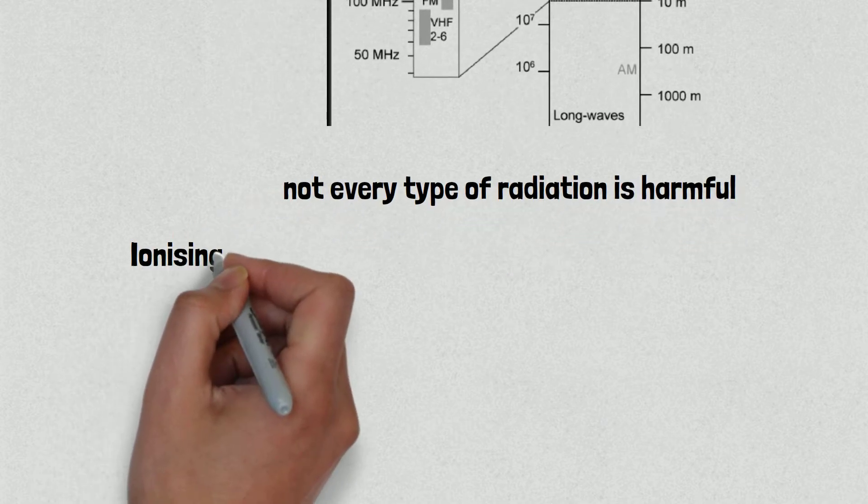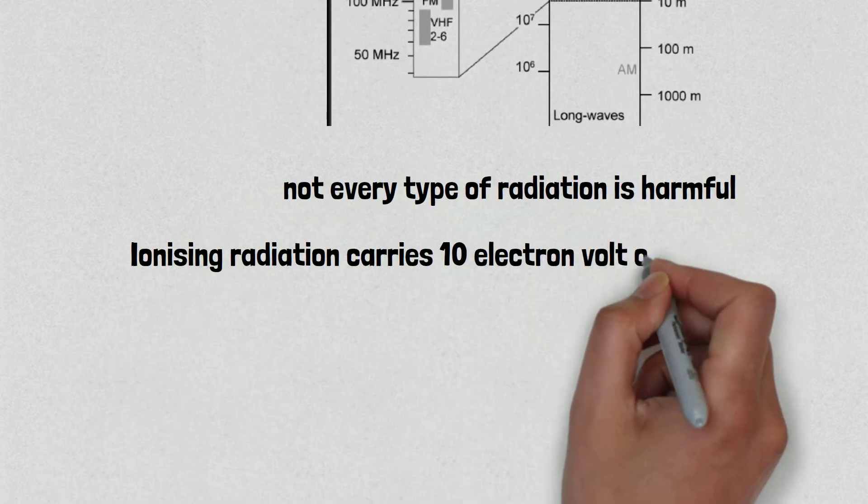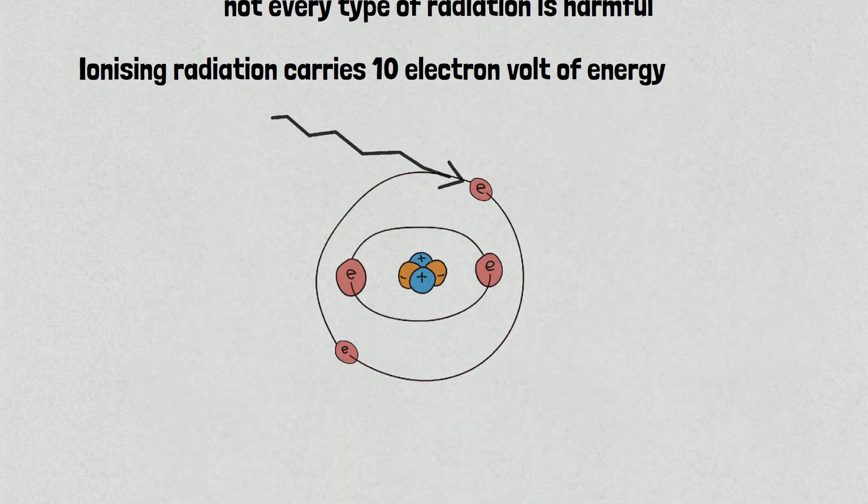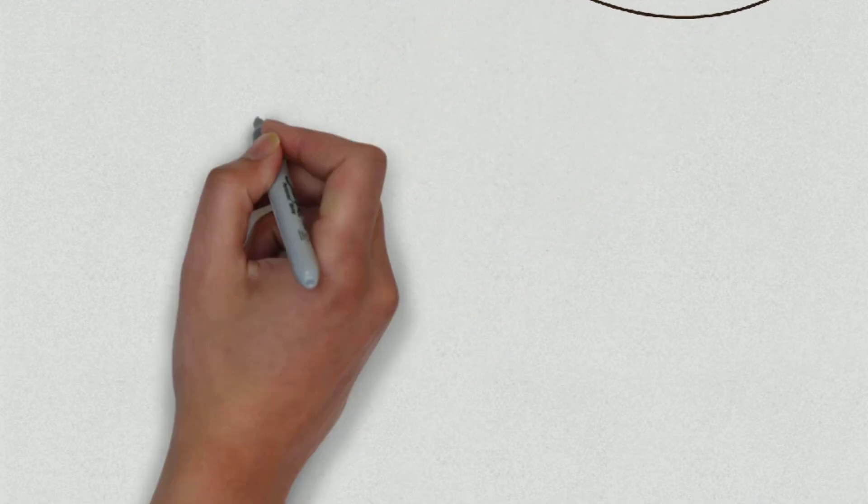Like I said, ionizing radiation carries 10 electron volts of energy, which is enough to break chemical bonds and rip off the electron from its orbit. So yes, it's harmful to us.